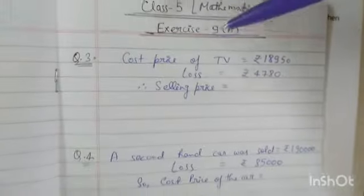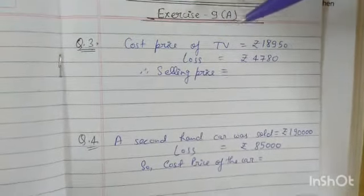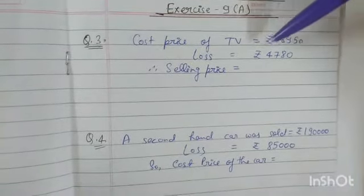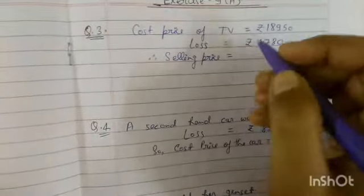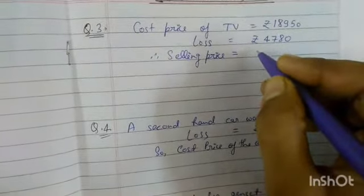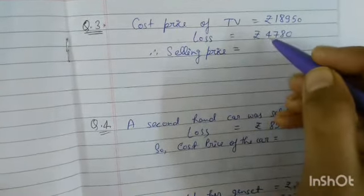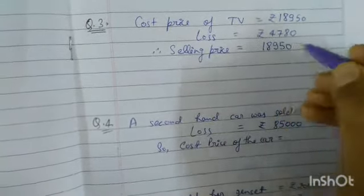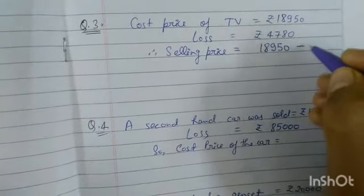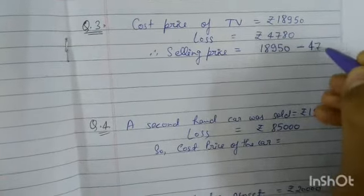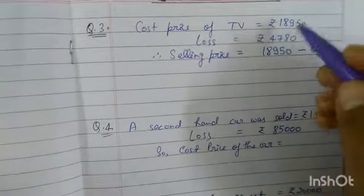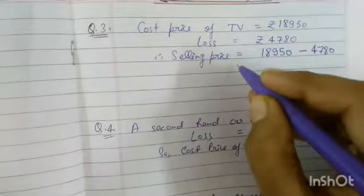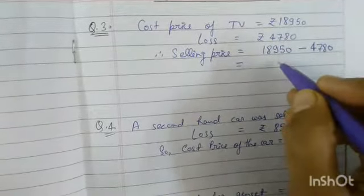Now exercise 9a, question number 3. Cost price of a TV is rupees 18,950 and loss is 4,780. So the sales price is less here: 18,950 minus 4,780, because in a loss situation cost price is greater than sales price. So subtract 4,780.